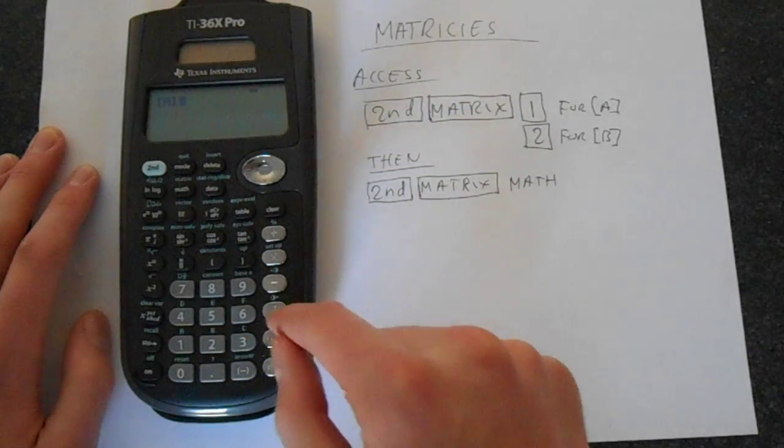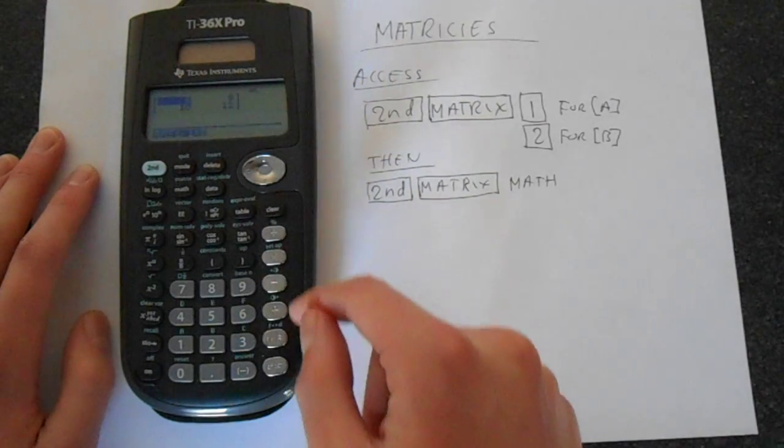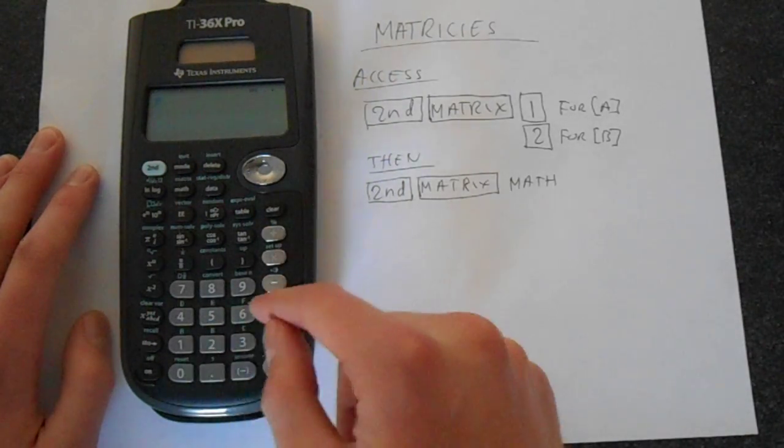So let's put matrix A up and then second function matrix 2 gives us matrix B and we can add those just using the add key there.